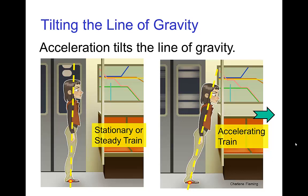On the other hand, if the train accelerates forward, then to stay in balance, the character needs to lean forward. One way to understand this is that the acceleration of the train combines with the acceleration of gravity. The acceleration of the train causes the line of gravity to tilt in the direction of the accelerating train, so the character needs to lean forward to stay in balance with this tilted line of gravity.